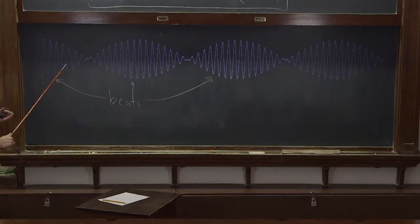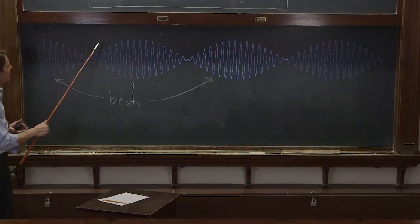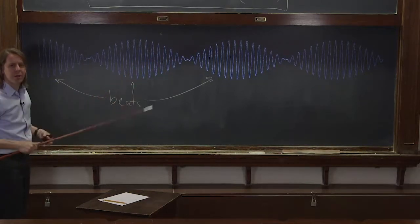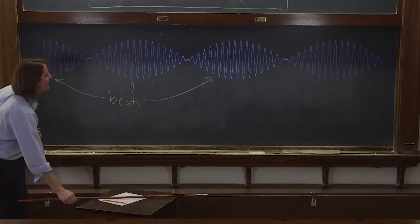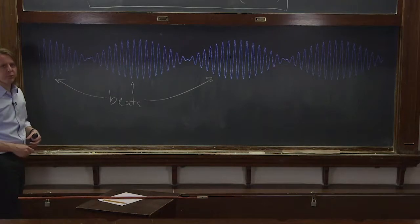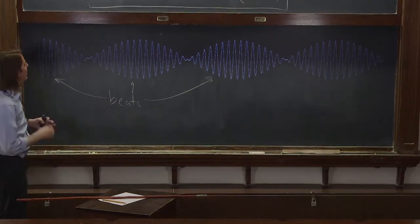So if you were to look at this wave, or maybe listen to it, it would be a large amplitude, then quiet. A large amplitude, quiet. Wah, wah, wah. That's the beat effect that you get when you superpose two similar frequencies.